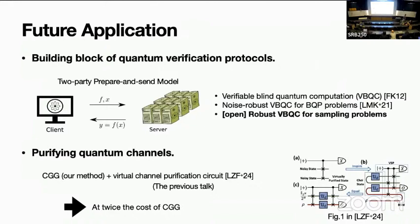For future applications, one direction is combining the cyclic group gadget with error correction codes. Another is addressing robust quantum verification protocols, especially in a quantum ecosystem with quantumly limited clients and servers, where you want to verify the correctness or blindness of computation. This is well studied for circuit tasks but not well studied for sampling problems. Another direction is combining with virtual channel purification, as presented by Zhenyu in the previous talk.